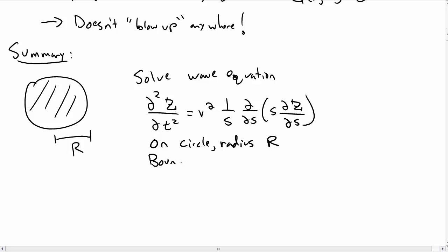We have boundary conditions that we're going to impose when solving this equation. The boundary conditions are that the edge is fixed, so z at s equal to r is zero. And z inside doesn't blow up at any point. That seems like a reasonable thing to expect.